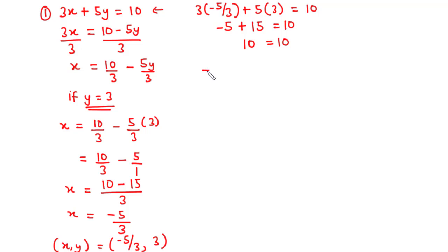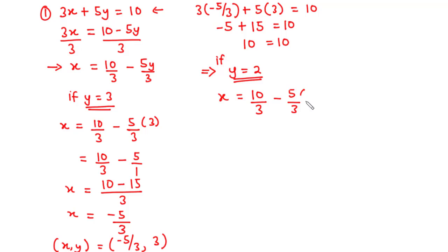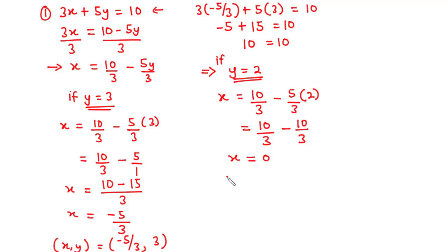Now, let's choose another value for y. This time, let's assume y equals 2. Substituting y equals 2 into the equation: x equals 10 over 3 minus 5 over 3 times 2. This becomes 10 over 3 minus 10 over 3, which equals 0. So, if y equals 2, then x equals 0. Therefore, the x, y pair becomes (0, 2).